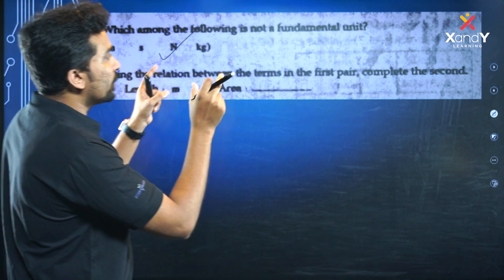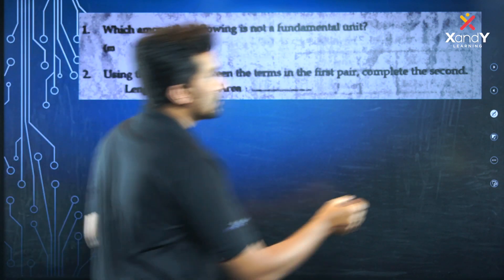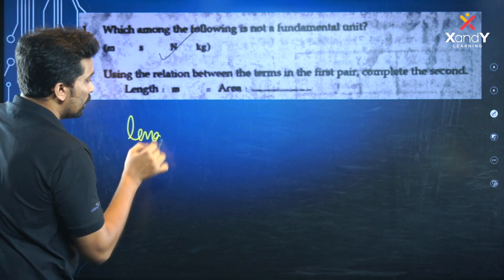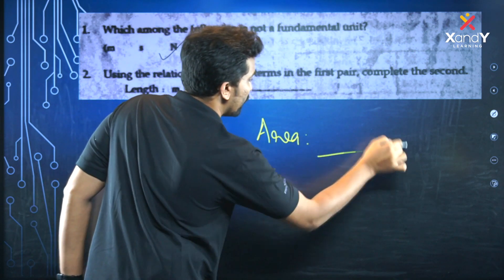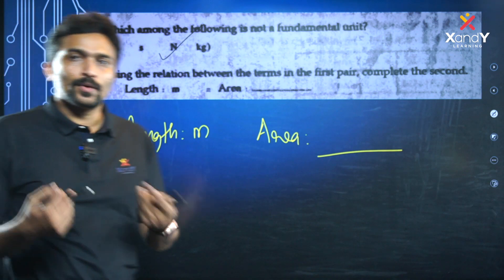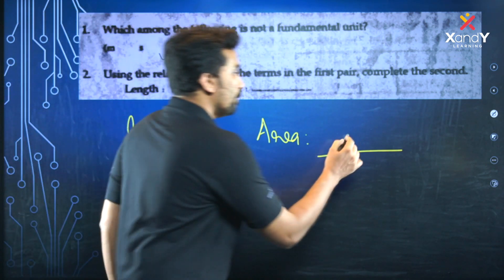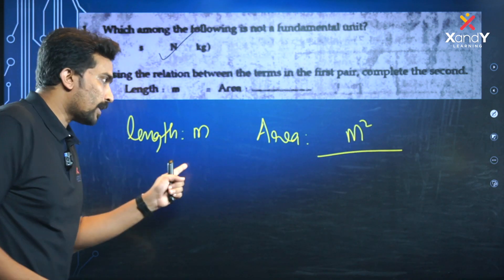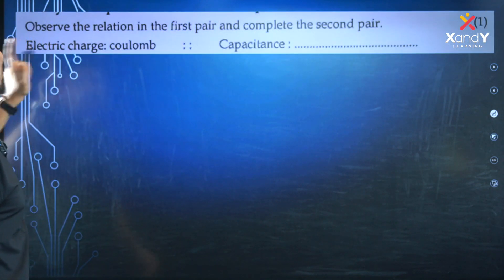Next question: Using the relation between terms in the first pair, complete the second pair. Length is measured in meter. So, if the first pair is length to meter, then by the same relation, area is measured in meter squared.